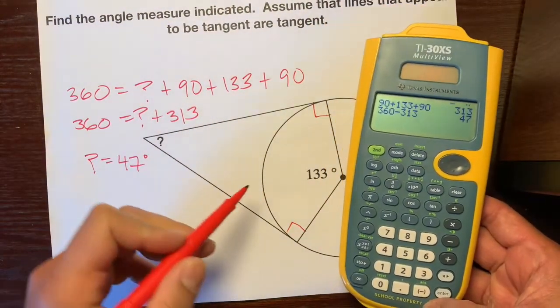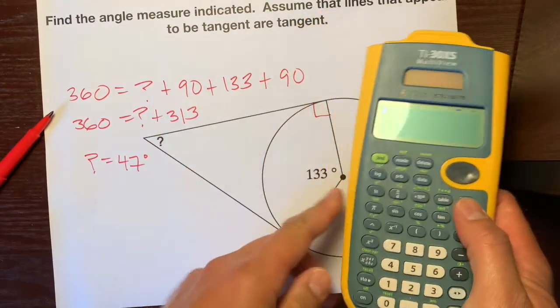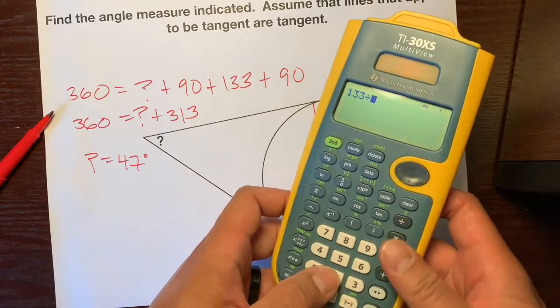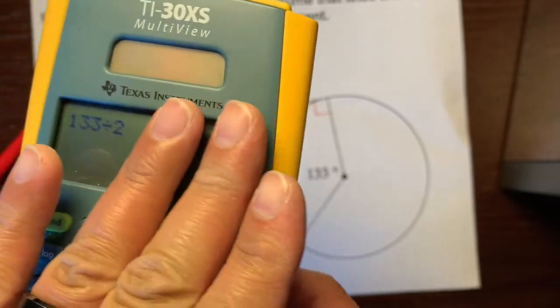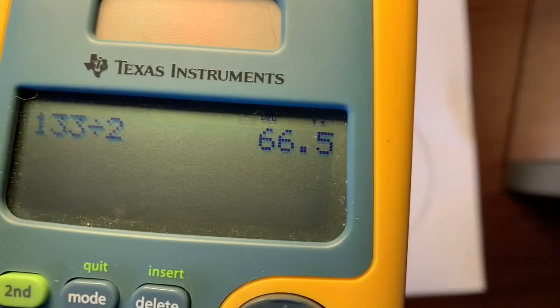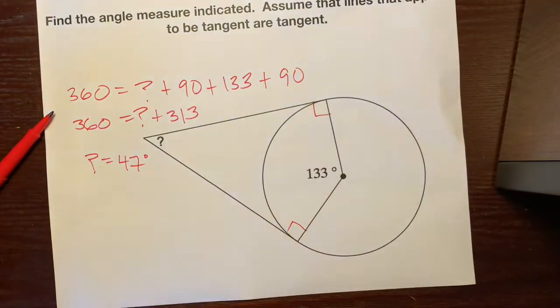Okay, now some of you guys, from the previous problem, what you were going to do was just take this 133 and divide it by 2. But look at that, that's 66.5. Let me even wipe off that dust there. That is 66.5, not 47. So that's the correct answer.